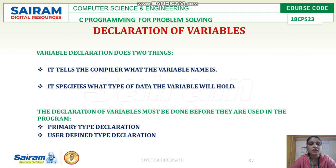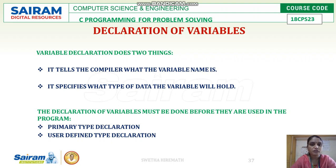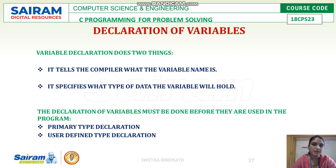The declaration of variables must be done before they are used in a program. So before we are going to use any of the variables in our program, we have to declare them first. Declaration of variables can be done in two different types: primary type declaration and user-defined type declaration.